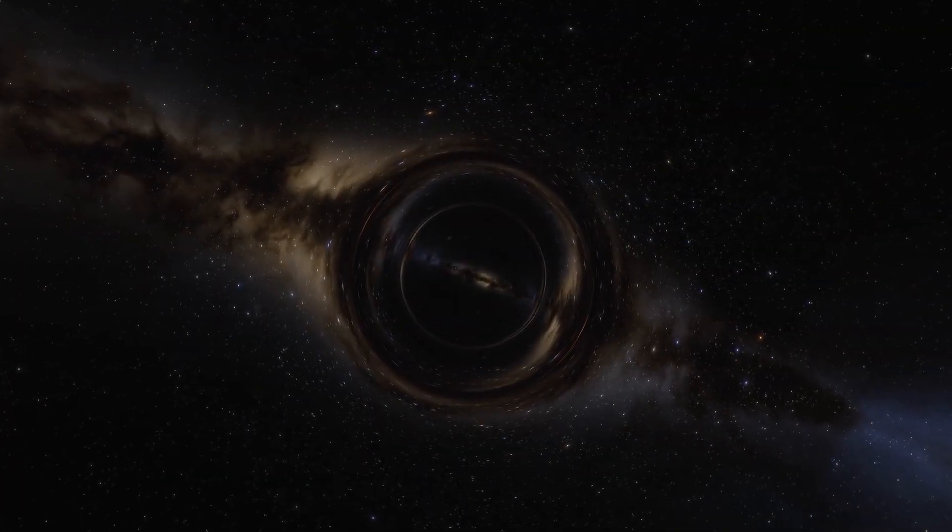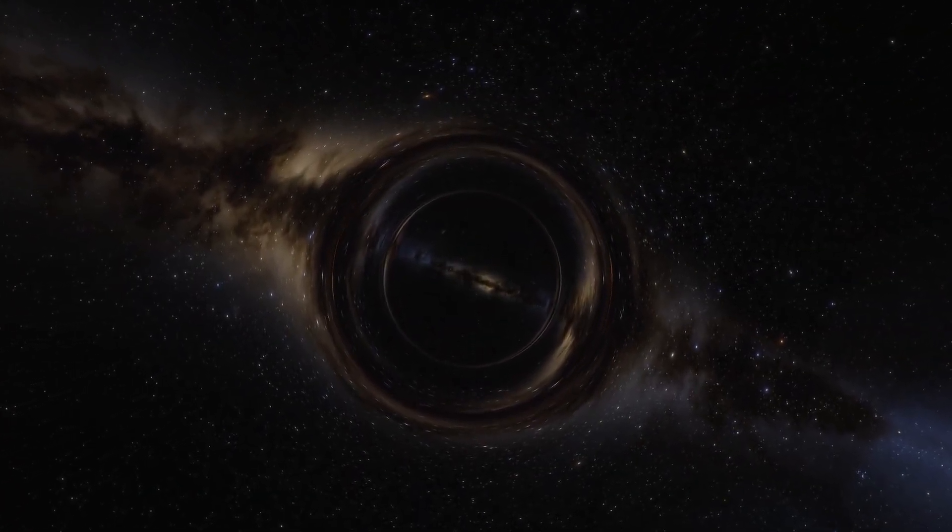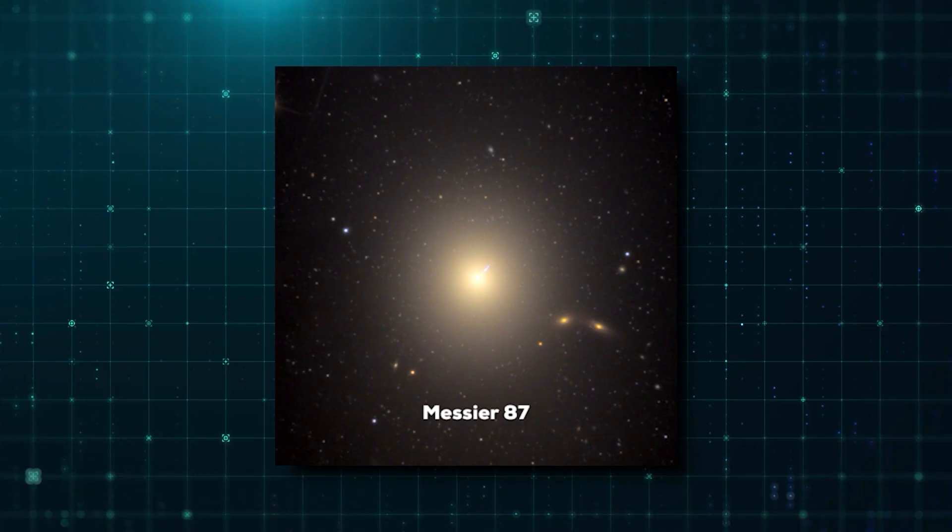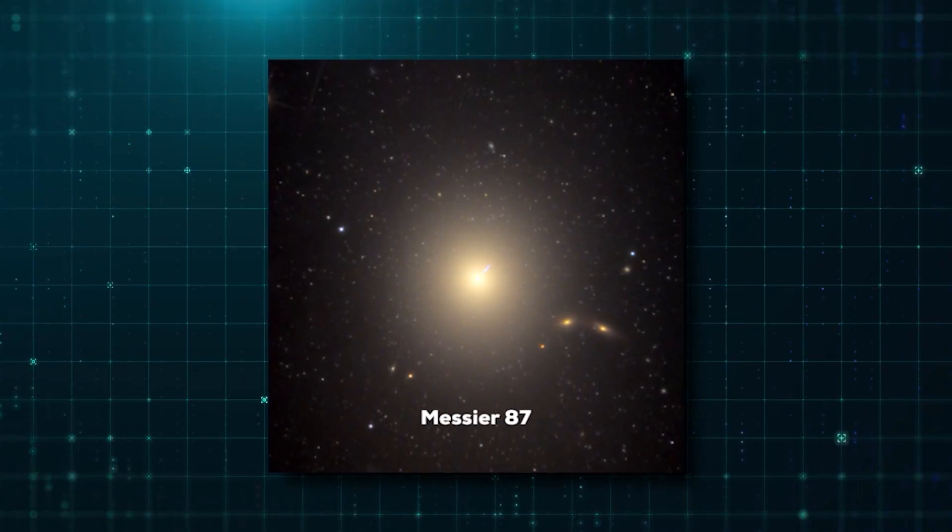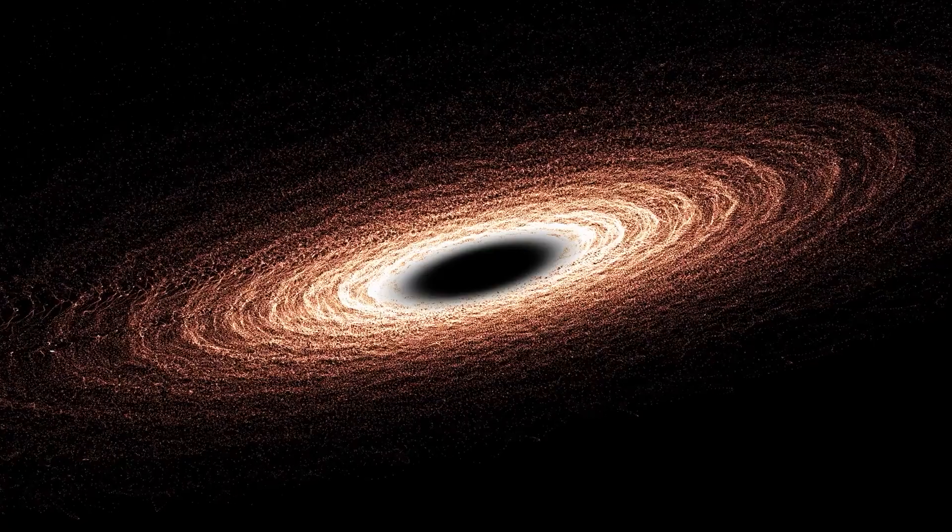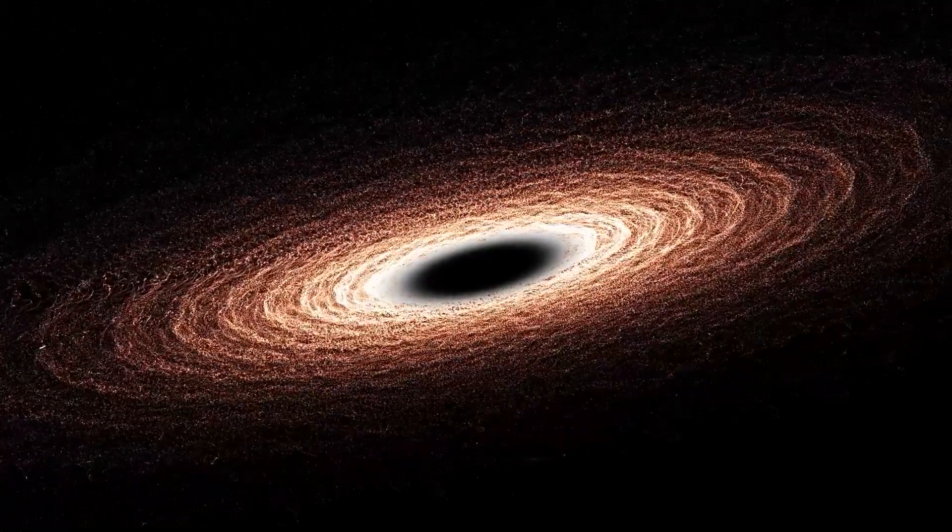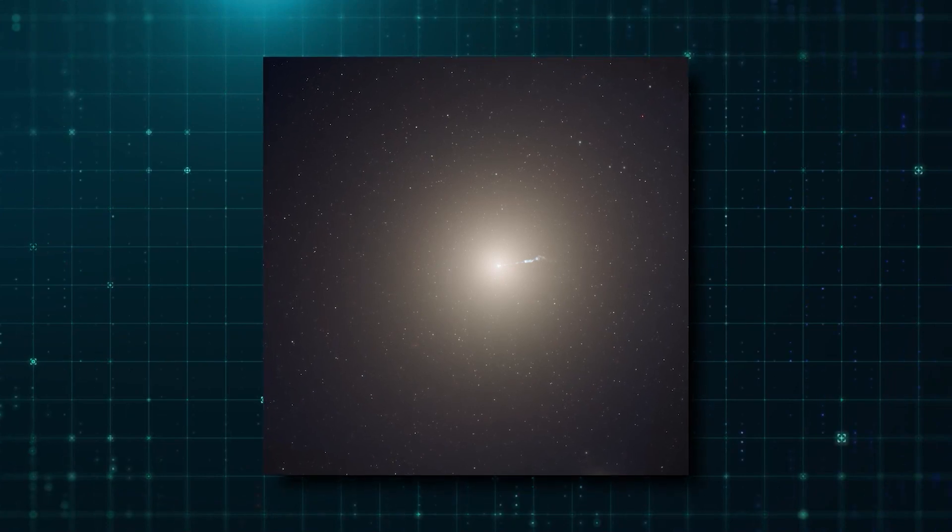Thanks to the Event Horizon Telescope partnership, black holes are no longer an abstract concept. Eight independent telescopes focused on Messier M87, a galaxy 55 million light years from Earth, to capture the first photograph of its sort.